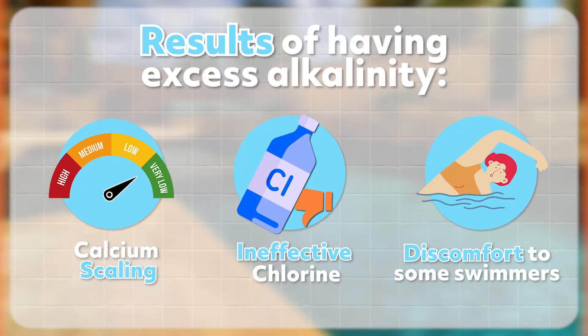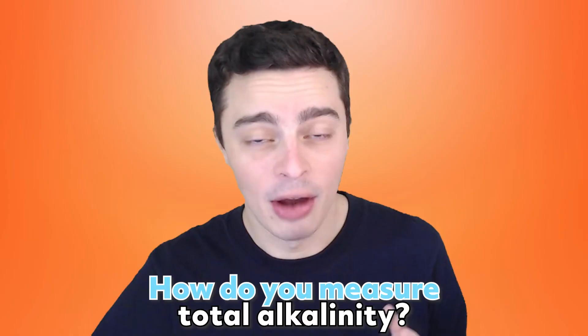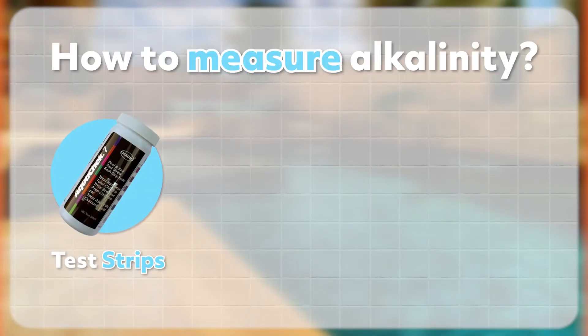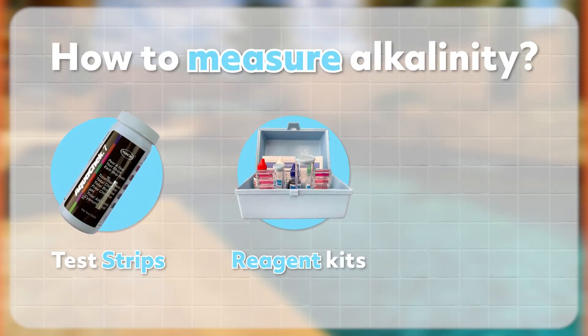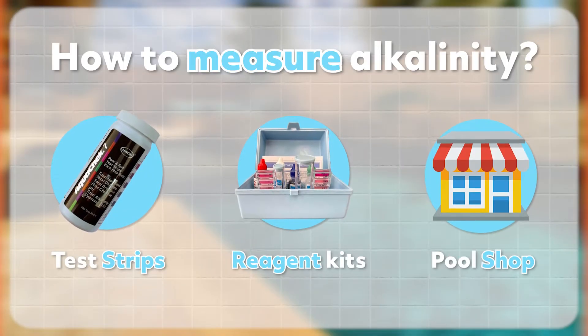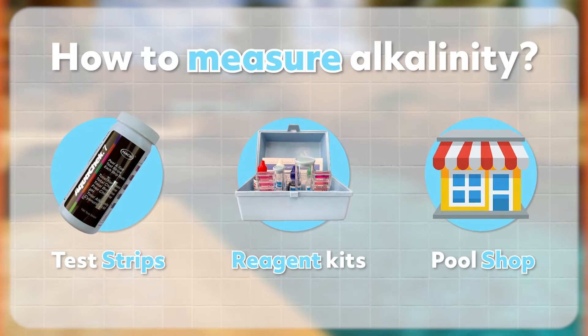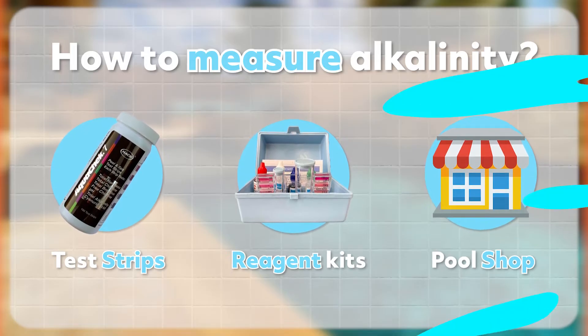So, those are the main three problems that you can see with high alkalinity in a swimming pool. How do you measure total alkalinity? Well, there are three main ways. The first is you can use some test strips, second is to use a reagent test kit, and third you can take a sample to your local pool shop and they will do a test of the water for you.